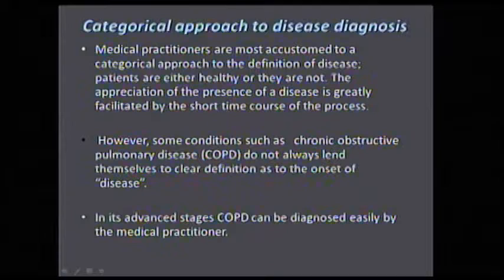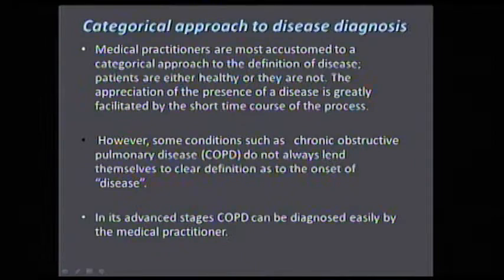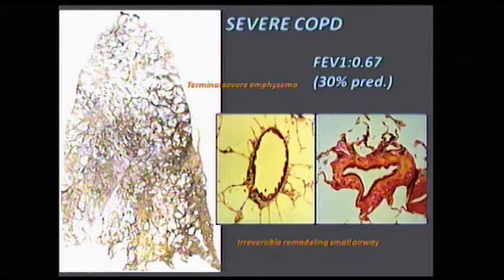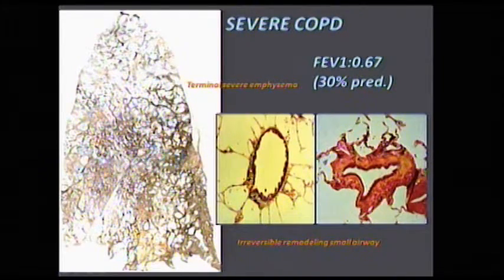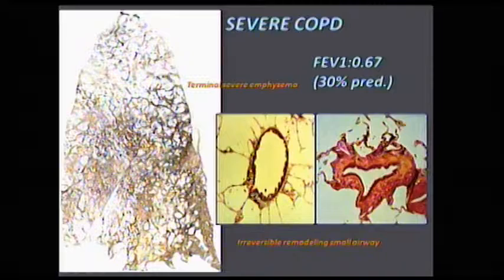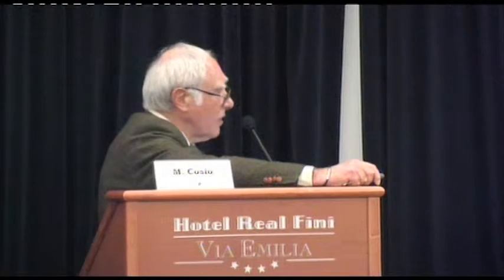Unfortunately, it is only in the advanced stages of COPD that a medical practitioner can easily diagnose the disease. That leads to a problem we all know: by the time we see the patient, most of them have a lung that looks like this — all emphysema — and an airway that has gone from a beautiful, very elegant small airway to one where there is absolutely nothing we can reverse and nothing we can treat.